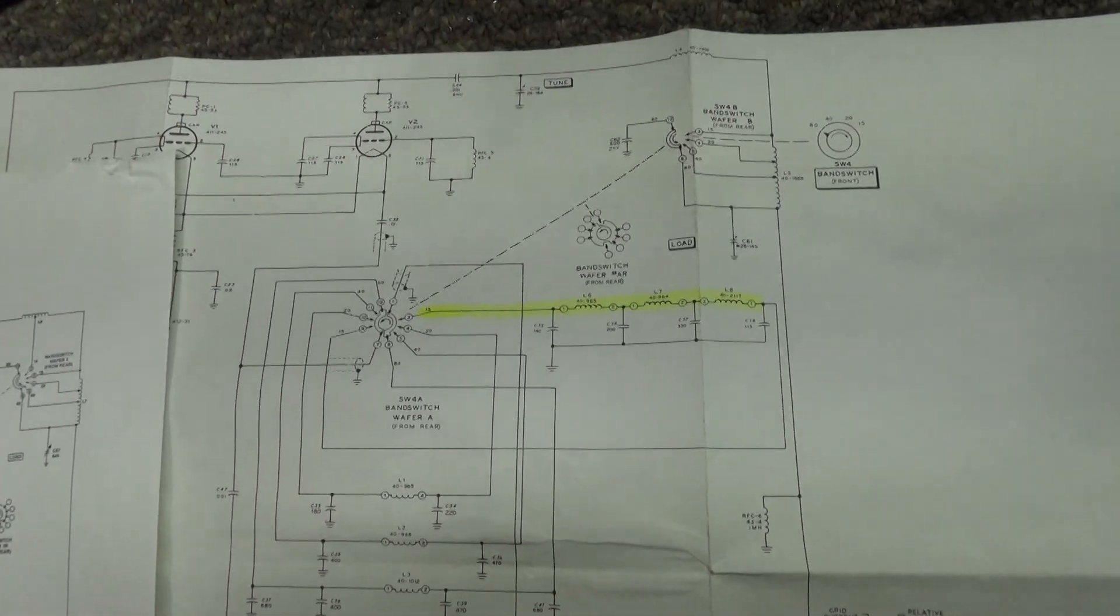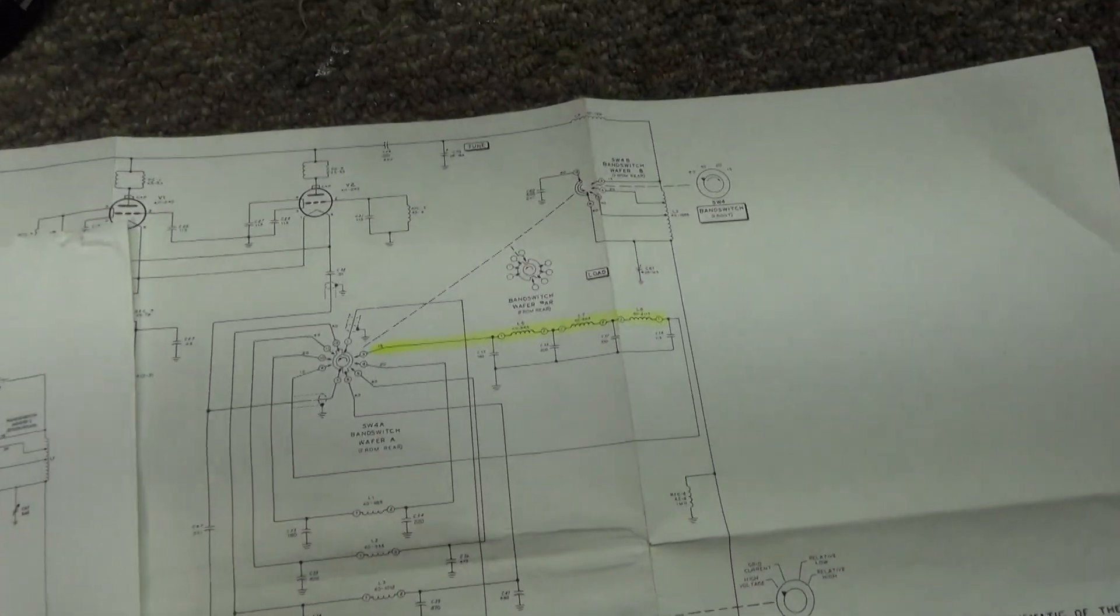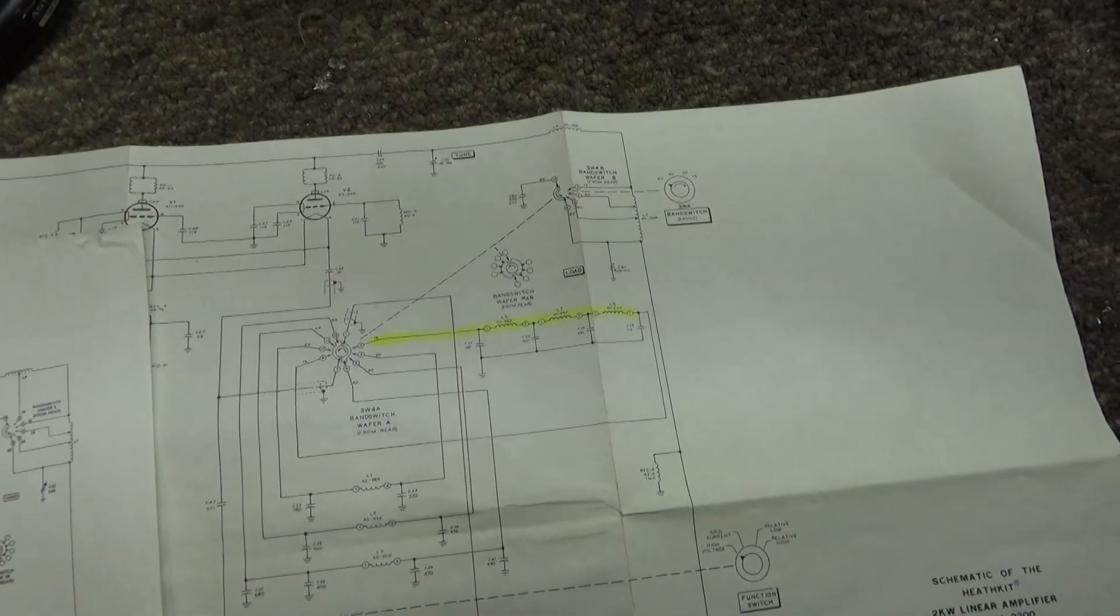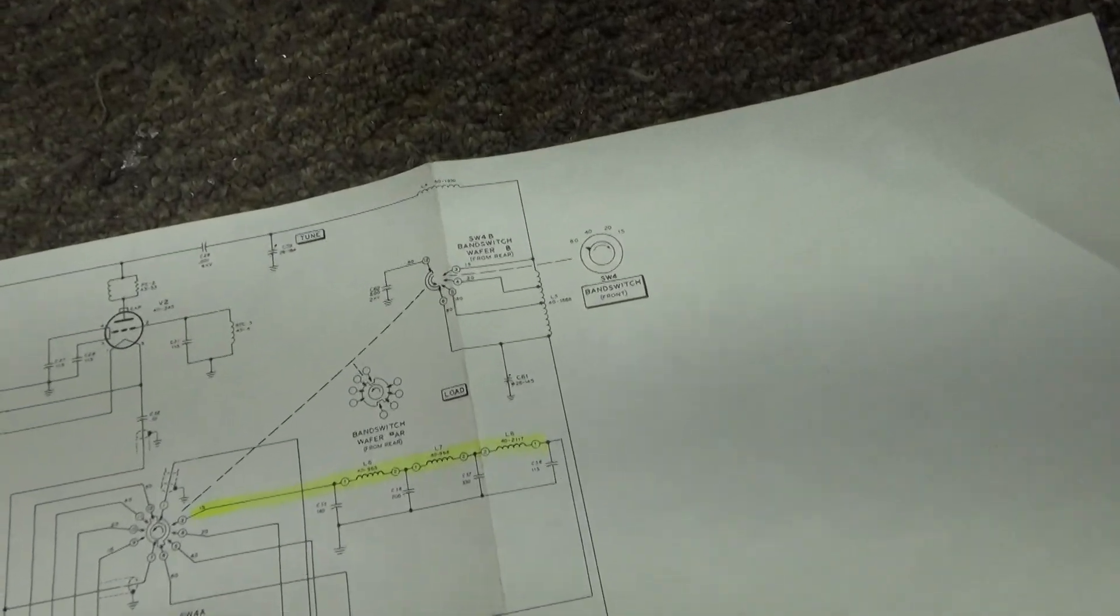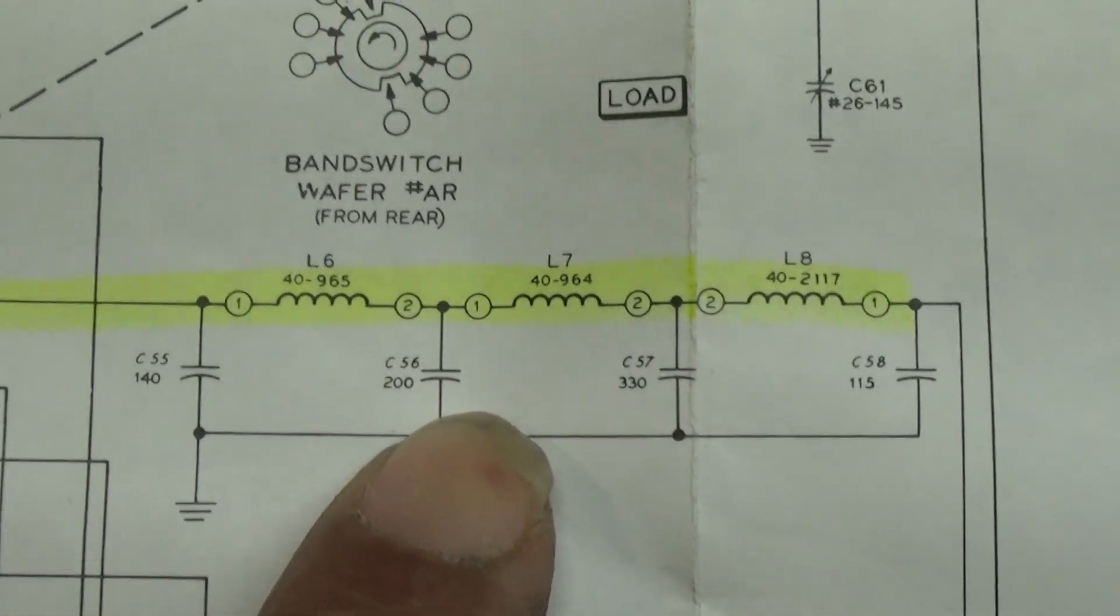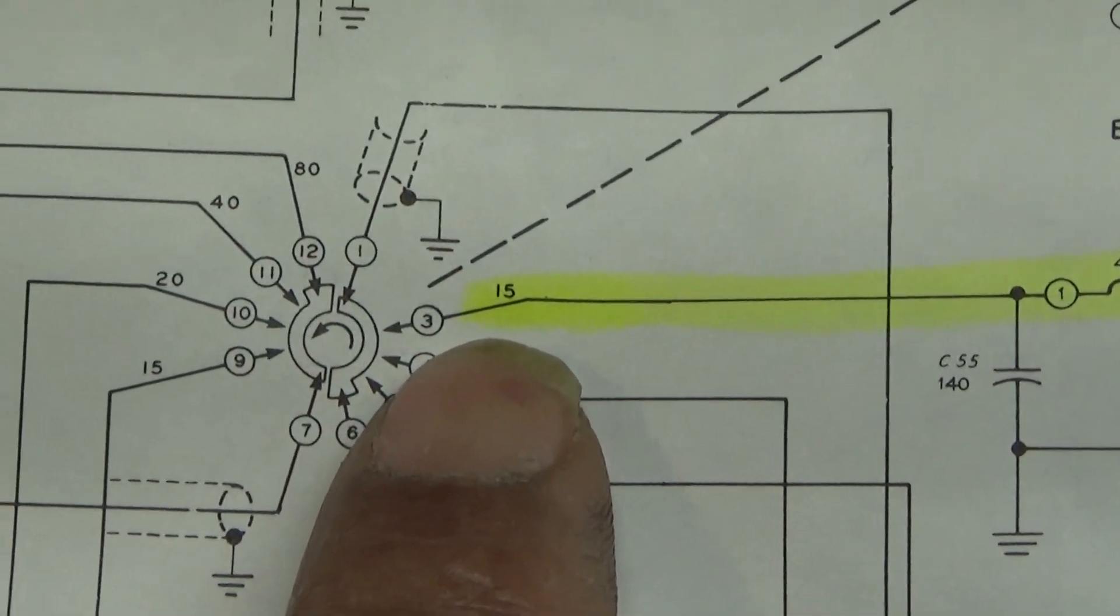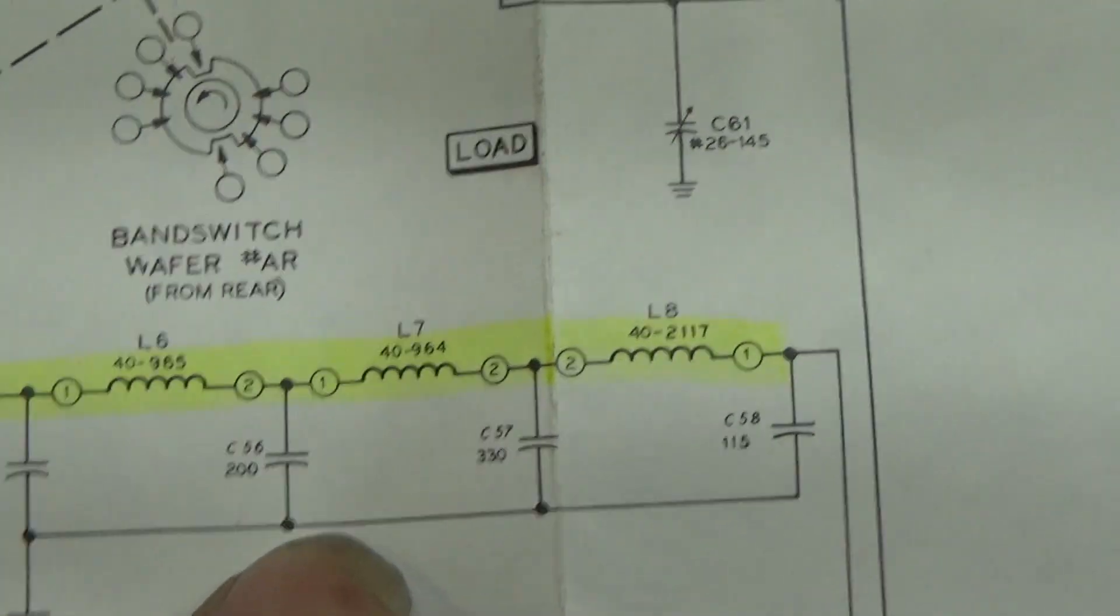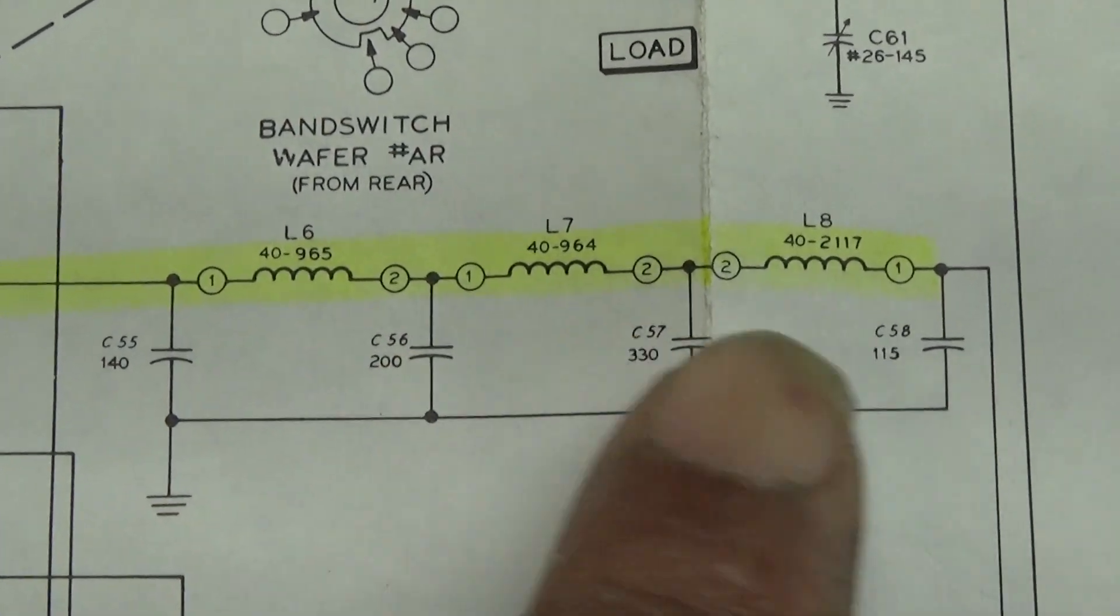...to run those amps on 11 meters, it was like a TVI trap where the TVI trap doesn't let the TV frequencies go through, or harmonic trap. And what that is right here, that's your 15 meter position. This one doesn't have a 10 meter on this HL-2200 and SB221s. And what this...